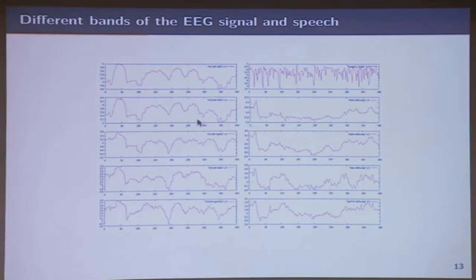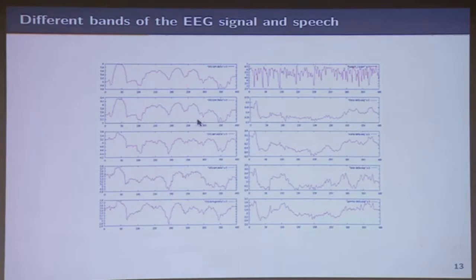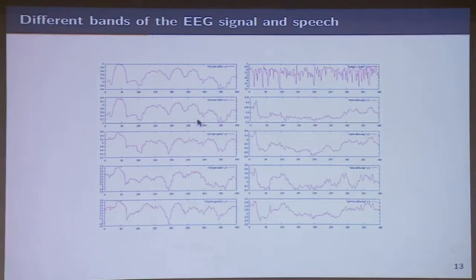The frequencies of interest are from 0.3 to 30 Hz. The 0.3 to 3 Hz range corresponds to what is called the delta band, then you have higher bands going up — theta (3 to 8 Hz), alpha (8 to 13 Hz), beta (13 to 20 Hz), and gamma (20 to 30 Hz) — something like that, I don't remember the exact details. Each of these bands corresponds to different kinds of information.